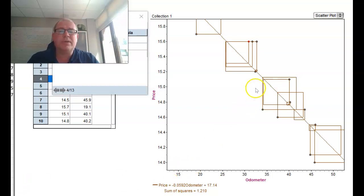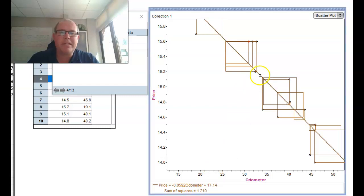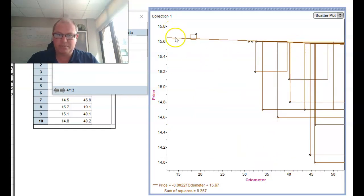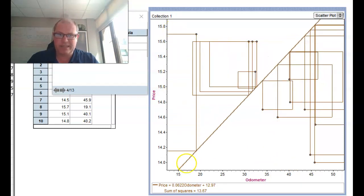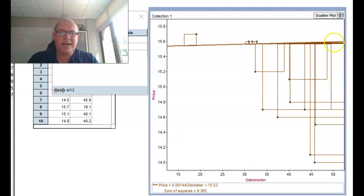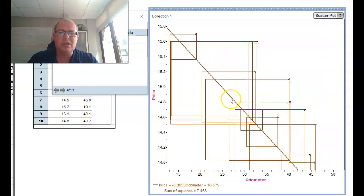Competition number two is to move your line to get an even better sum of squares, so a lower number. You can see what happens if I make the line really bad - if I move the line down here my sum of squares has gone really big, 8.201. I can make it even worse by rotating it around and have a dreadful line. That's 14.57.